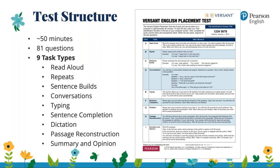There are nine item types in VEPT: read aloud, repeats, sentence build, conversations, typing, sentence completion, dictation, passage reconstruction, and summary and opinion. For the sake of brevity, I won't explain each one. I'd recommend trying out VEPT for yourself — we can provide all the codes to do that — or referring to our online tutorial or our test validation guide, which goes into more detail about the item types. But I will highlight two that I think provide really nice examples of what they're doing.